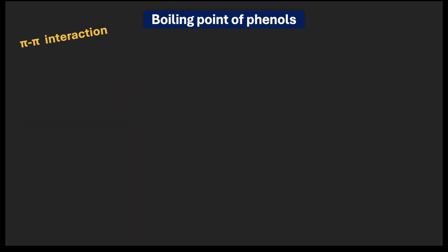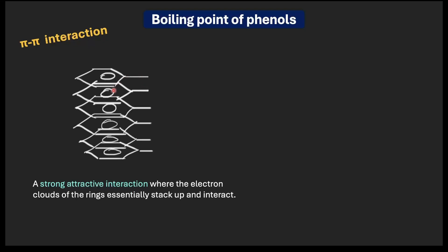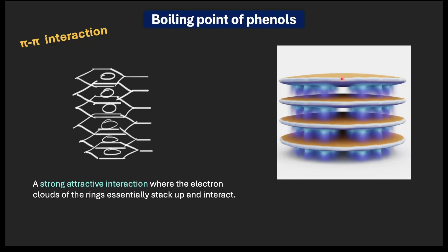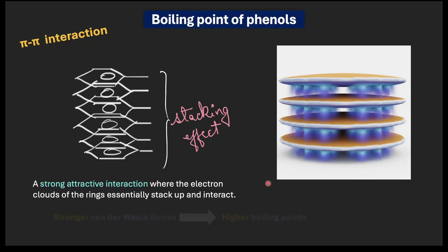What makes phenol unique is the pi-pi interaction — a strong attractive interaction where the electron clouds of the aromatic rings stack up against each other. Think of it like flat pancakes or dosas stacking on top of each other: the flat, pancake-like benzene rings align themselves in layers, and the delocalized electron clouds in these rings attract each other, creating a powerful stacking effect. This additional interaction makes phenol molecules stick together more strongly, contributing to greater van der Waals forces and higher boiling points.